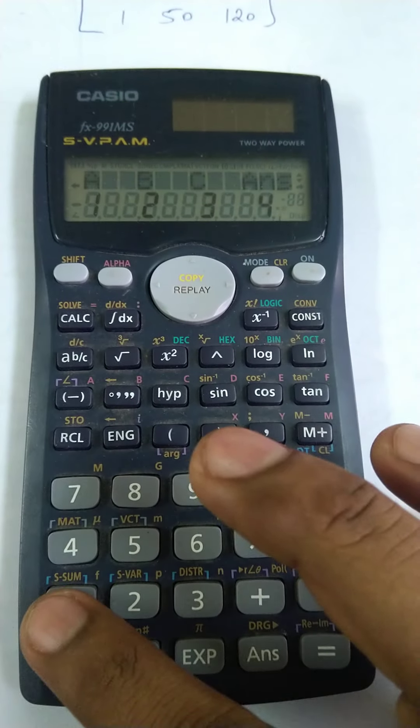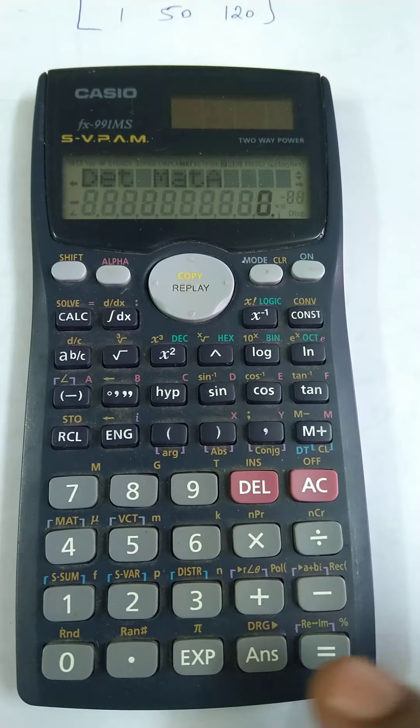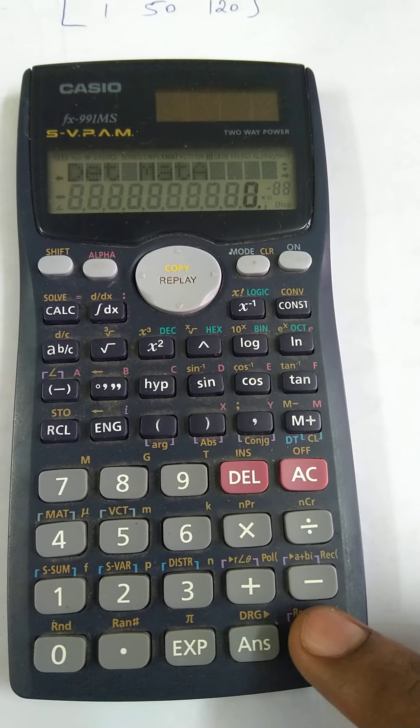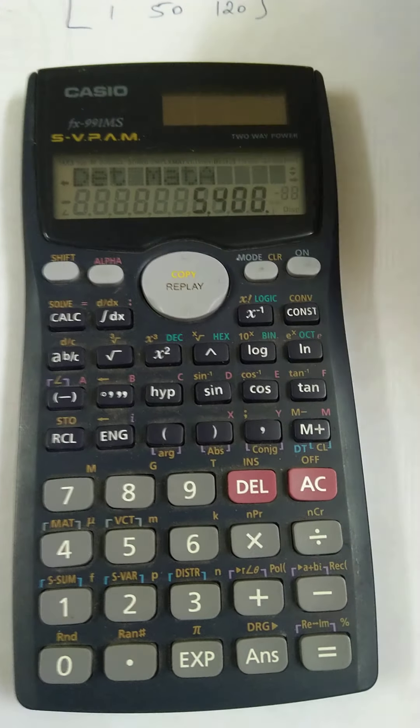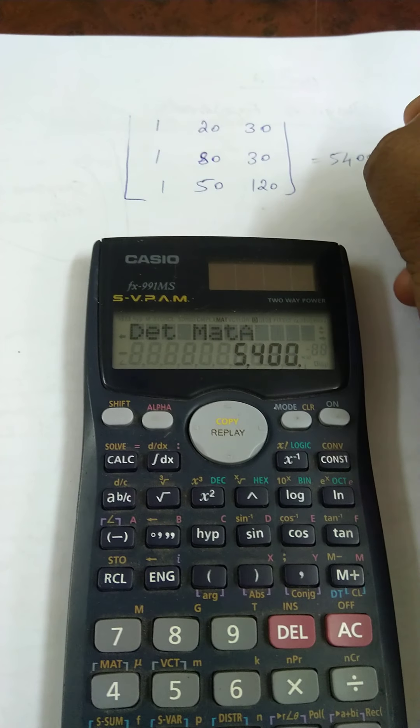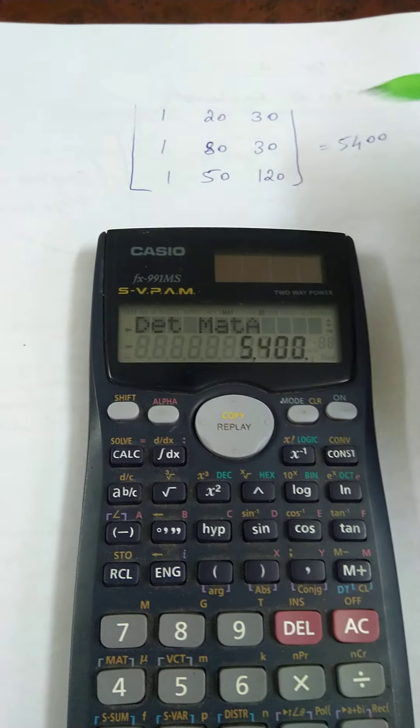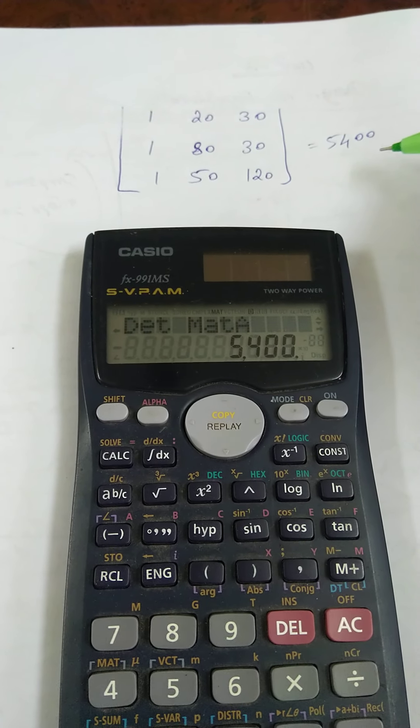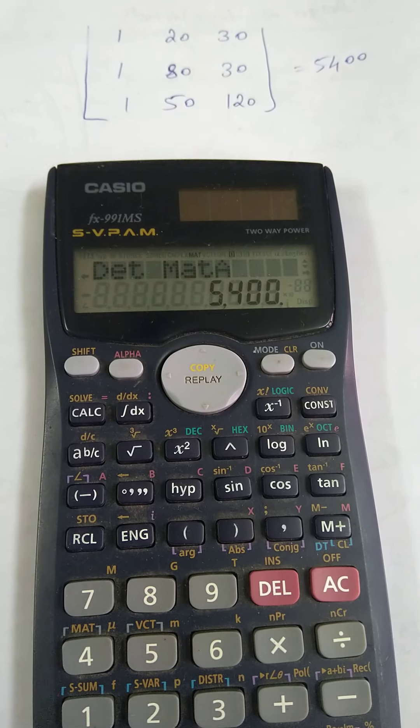Press 1 for matrix A, then press equal. The result is 5400. This is the determinant of the matrix. Thank you.